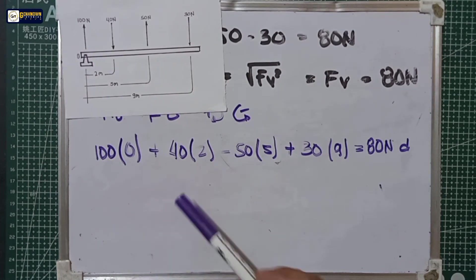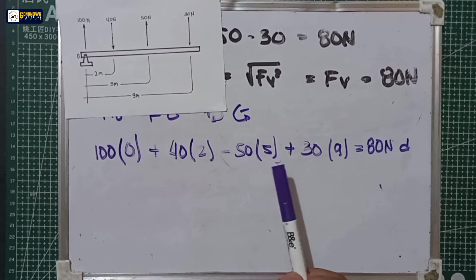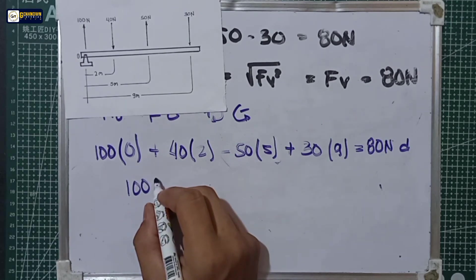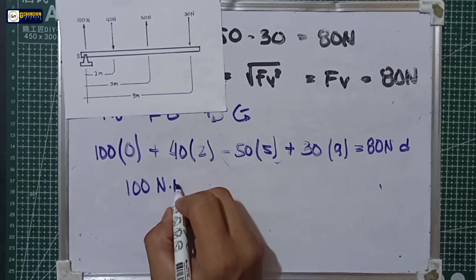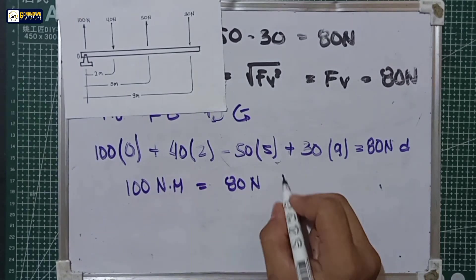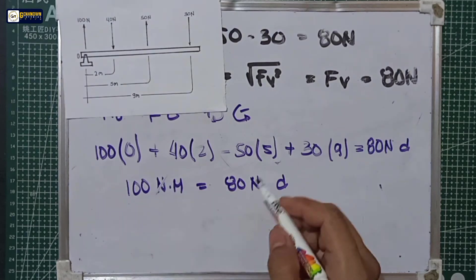This is equal to 100 newton meters, equal to 80 newtons times d. Cancellation of newtons.